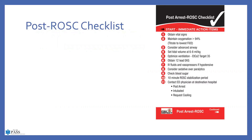Your post-ROSC checklist includes immediate action items: vitals, maintain oxygenation, advanced airway with tidal volume of 6 to 8 milliliters per kilo if using a vent, titrate end-tidal to 35–45, get a 12-lead EKG, think about IV fluids based on blood pressure, and check blood sugar. Repeat assessment at a 10-minute ROSC stabilization period to see if any changes are needed. Contact the ED and let them know you are on your way in.